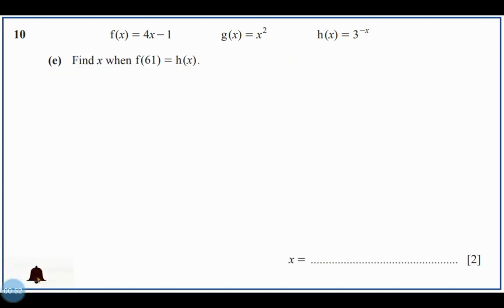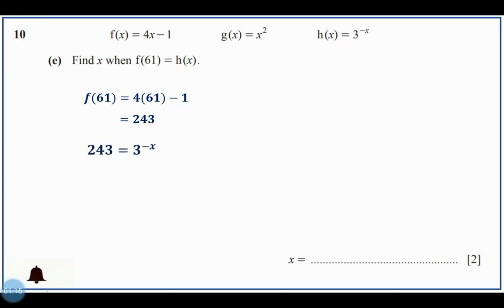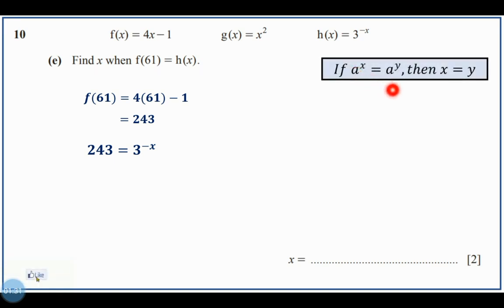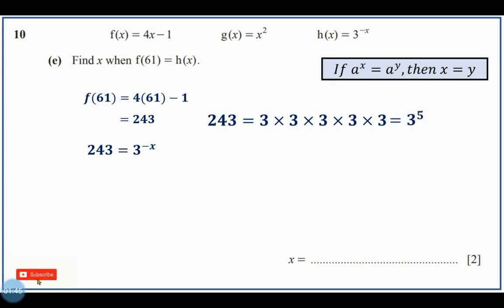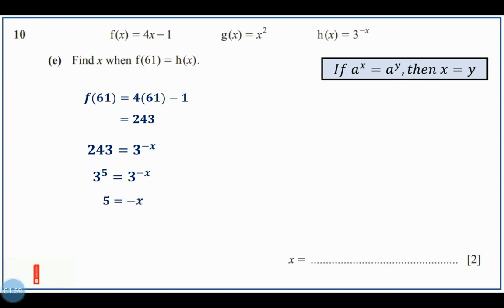Letter E: find x when f(61) = h(x). For f(61), change x with 61: 4 times 61 minus 1 = 243. So 243 = h(x) = 3 to the power of negative x. Since 243 = 3 times 3 times 3 times 3 times 3 = 3 to the power of 5, we have 3 to the power of 5 = 3 to the power of negative x. By the rule: if a to the power of x equals a to the power of y then x equals y, so 5 = negative x, therefore x = negative 5.